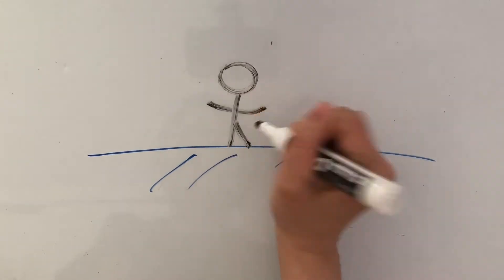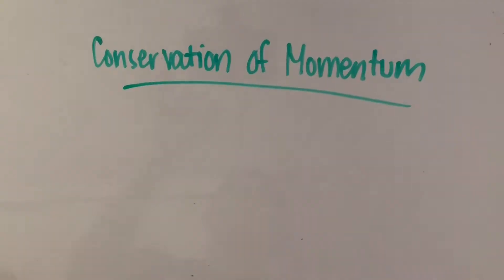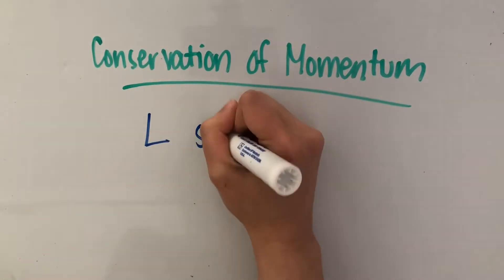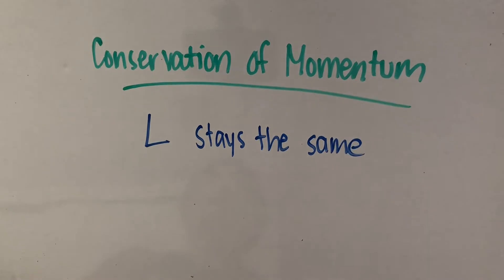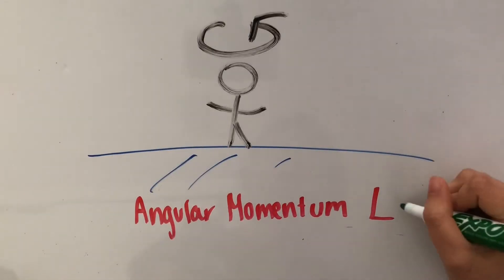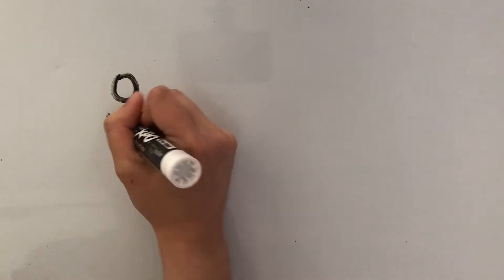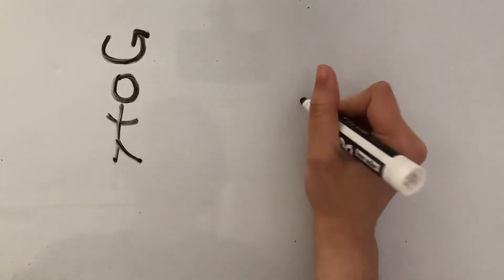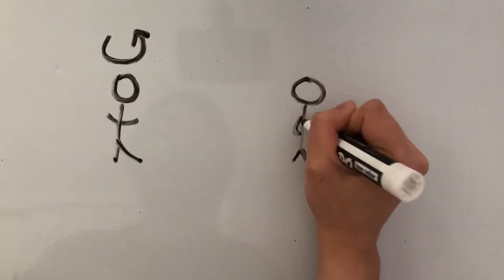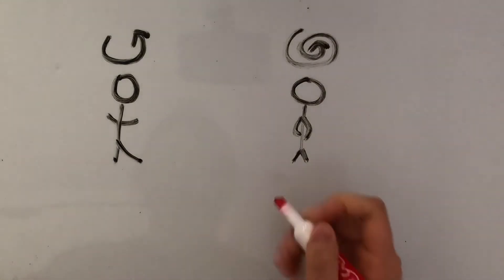We can say that the figure skater has a particular angular momentum while she's spinning on the ice. Because of conservation of momentum, we know that this angular momentum quantity has to stay the same the whole time she's spinning. By definition, angular momentum is equal to angular velocity times moment of inertia. When the figure skater is skating with her arms out, she's rotating at a constant speed, but when she pulls her arms in towards her body, she speeds up and starts spinning really fast, which means her angular velocity increases.